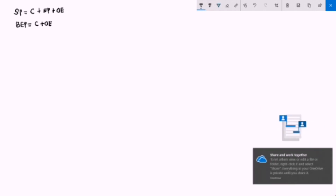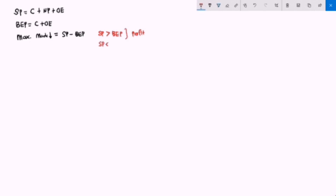The break-even price is given by cost plus operating expenses. We can also find the maximum markdown, which is given by selling price minus BEP. If selling price is greater than BEP, we have profit; if selling price is less than BEP, the maximum markdown SP minus BEP will be negative, so we get a loss. The maximum percentage of markdown formula is: SP minus BEP, divided by SP, multiplied by 100%.